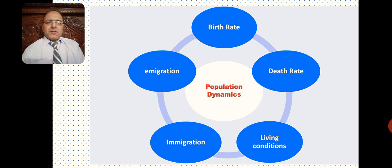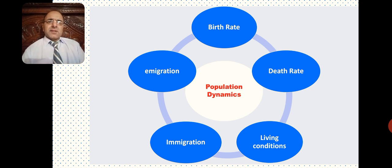Population dynamics can be further understood through the factors related to this concept. These factors include birth rate in a particular area or country — the increase or decrease in birth rate and the causes and consequences of that change. Similarly, death rate — how many people are dying, at what age, and what are the causes. The relationship between birth rate and death rate also falls within the fold of population dynamics.